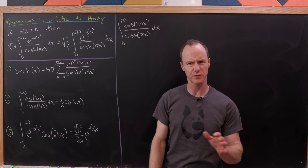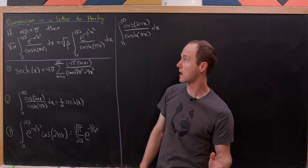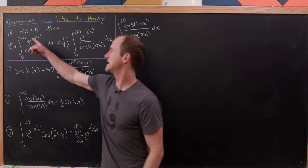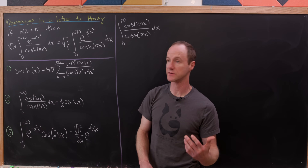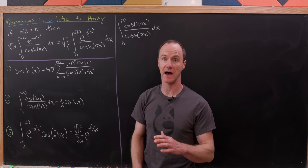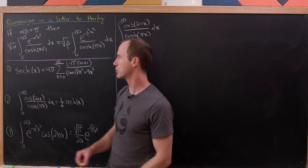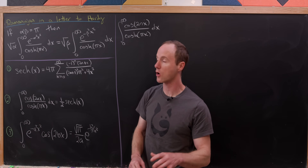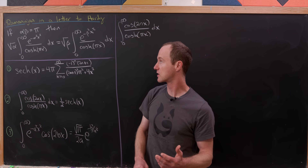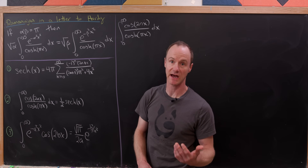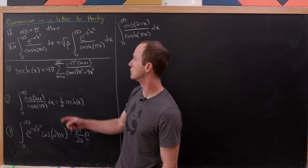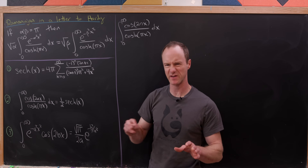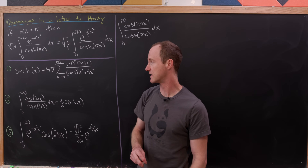Today we're going to look at this nice integral which was sent in a letter from Ramanujan to Hardy. We'll show that if alpha and beta are two numbers with a product of pi, then the square root of alpha times the integral from zero to infinity of e to the minus alpha squared x squared over the hyperbolic cosine of pi x dx equals the same expression with alpha replaced by beta. There's some cool symmetry inside this equation.